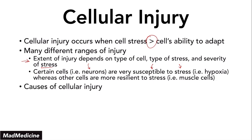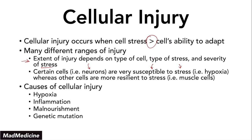Now let's talk about the causes of cellular injury. There are five main causes you should generally be aware of, because these encompass the majority of reasons why our cells get damaged. The first is hypoxia, the second is inflammation, then malnourishment, genetic mutation, and trauma — which is simply damage that occurs to the cell. We're not going to discuss these causes in depth in this video; we'll be covering each one in subsequent videos dedicated to hypoxia, inflammation, malnourishment, genetic mutations, and trauma. So please keep watching.